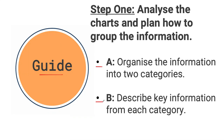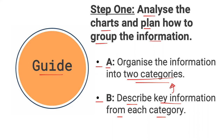We are going to analyze the charts and plan how to group the information. We want to organize the information into two categories. When looking at multiple pie charts, it can be confusing to understand how to make these two categories. And secondly, we're going to describe the key information from each of the two categories. It's very important that we do not discuss each and every piece of information from all of the pie charts — that is a pitfall. We're only going to be looking at the key information.